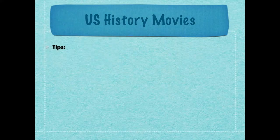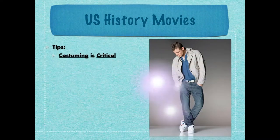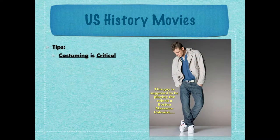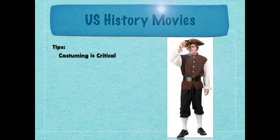Some do's and don'ts — tips I've seen over the years. One super important thing is costuming. Costuming is critical to making your film have high production value and making it believable. If this guy shows up to film a movie about the Boston Massacre dressed like that, does he look like a colonist? No. But you know what does look like a colonist? That. There are costumes on Amazon, at the Halloween store, at Goodwill — get some. I've also got some in the basement of the school. Get some. Costuming is super critical.